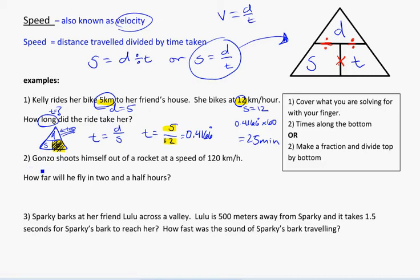Looking at the next example. Gonzo shoots himself out of a rocket at a speed of 120 km per hour. How far will he fly in 2 and a half hours? So let's assume his speed stays the same. How far will he fly in 2 and a half hours? So here, 120, that's my speed. And 2 and a half hours, well, what's that? That's the time. So I know time is equal to 2.5. How far? That's the D. That's what we're looking for.